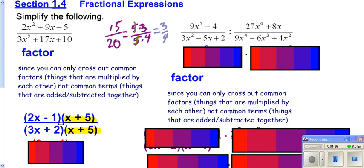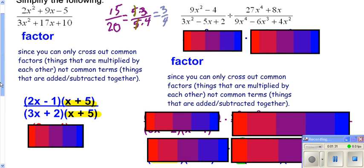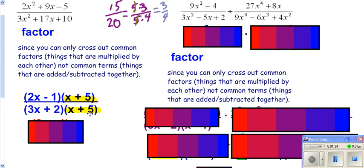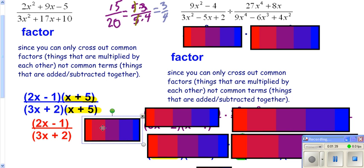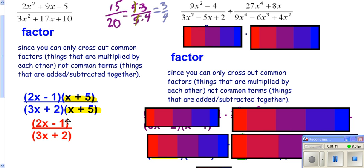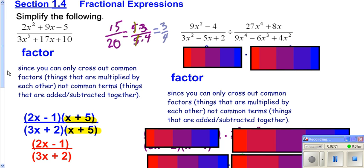After you factor the top and factor the bottom, you have an x-plus-5 that's the same on the top and the bottom. Since it's an x-plus-5 times the whole top and an x-plus-5 times the whole bottom, you can cross them out. You don't really need the parentheses around the top or the bottom, and so that's your final answer. You're not able to cross out the 2s or the x's because they are not common factors of the whole top and whole bottom.